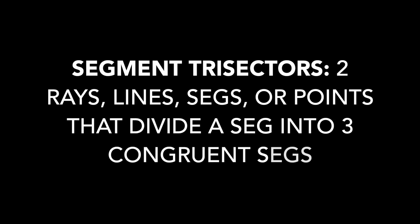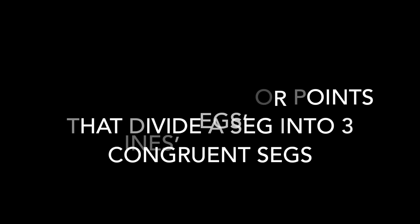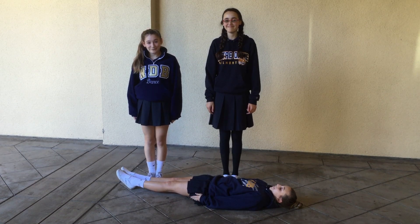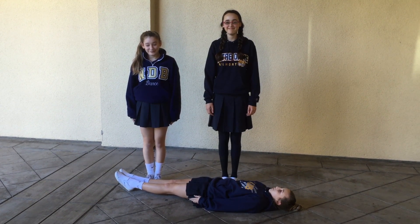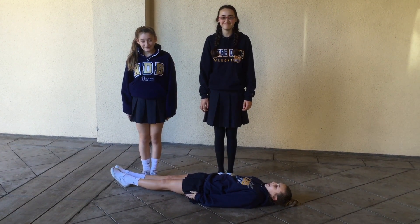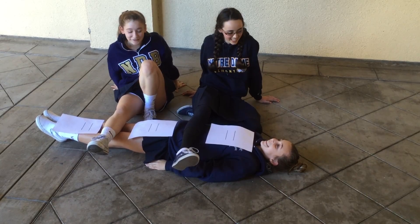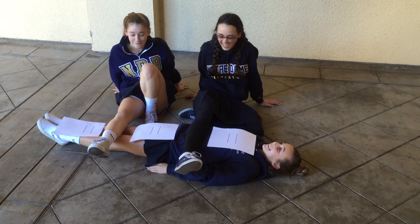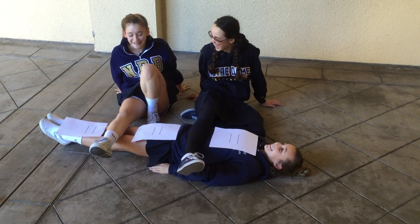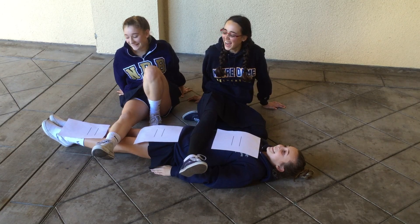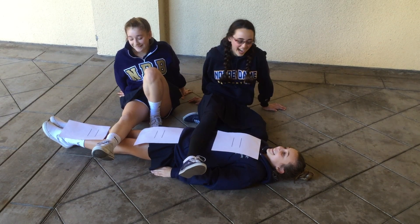Segment trisectors are two rays, lines, segments, or points that divide a segment into three congruent segments. As you can see, laying on the ground is just a normal segment. As you can see, the segment has been divided into three congruent segments.